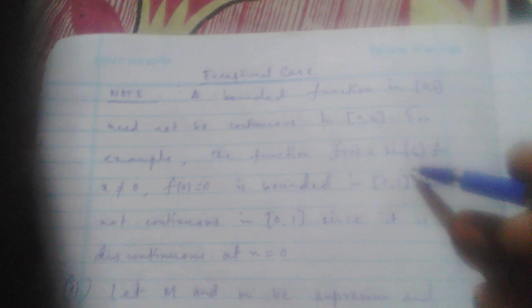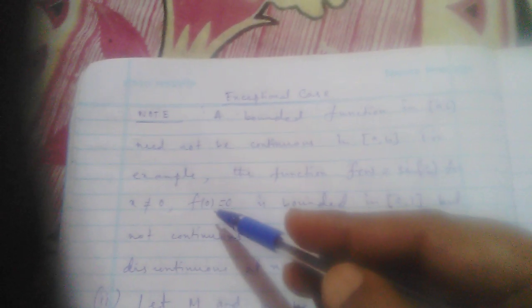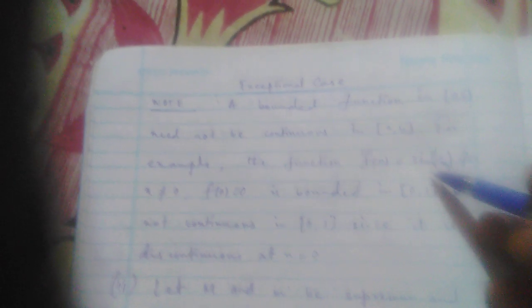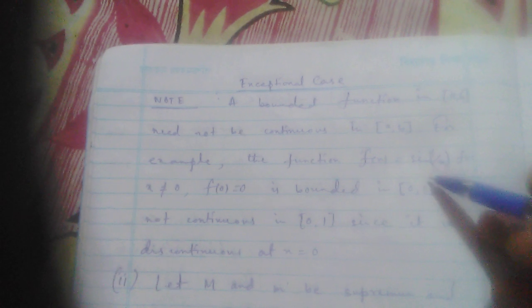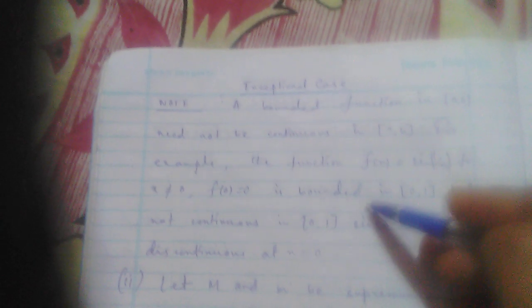For example, let f(x) = sin(1/x) for all x ≠ 0, and f(0) = 0. This function is bounded because sine is always a bounded function. However, the limit of sin(1/x) does not exist at x = 0, so it is not continuous at 0.